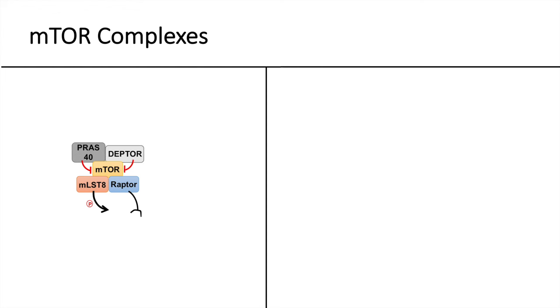There are also two proteins with inhibitory roles within the complex: PRAS40, otherwise known as proline-rich AKT substrate of 40 kilodaltons, and DEPTOR, the DEP domain-containing mTOR-interacting protein. The full names aren't really important — just realize that the complex is made up of many different proteins with both activating and inhibiting functions. Together, these make up mTOR complex 1, or mTORC1.